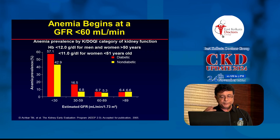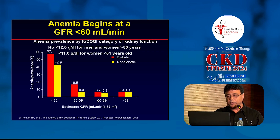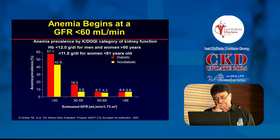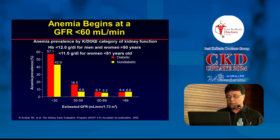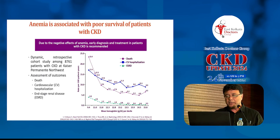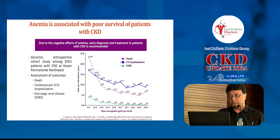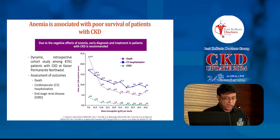As GFR worsens, the incidence of CKD-related anemia increases more and more - by the time a patient reaches dialysis, 95 percent are anemic. With worsening anemia there is increased number of deaths, increased morbidity, increased cardiovascular hospitalizations, and progression of disease. It is very important to find the anemia early and treat it not only to prevent progression but also to decrease death and severe hospitalization.